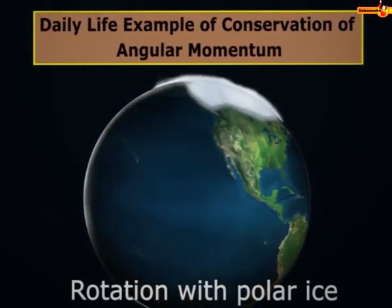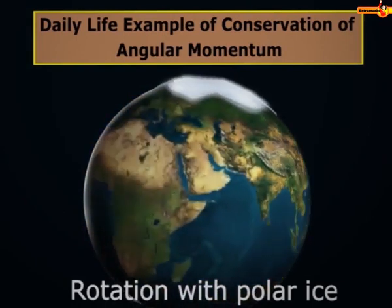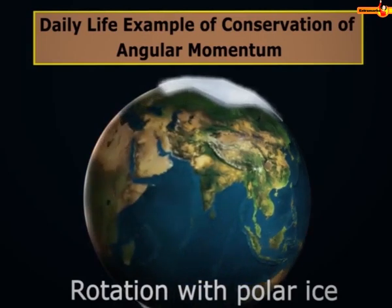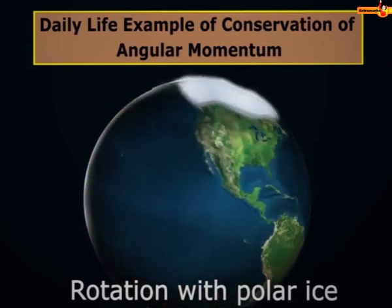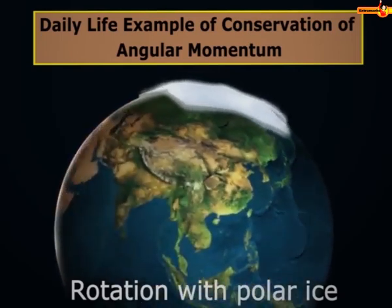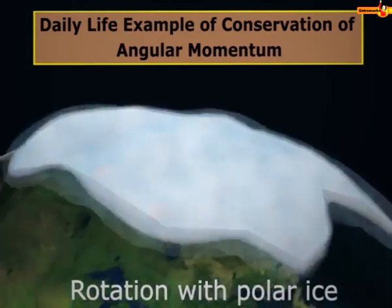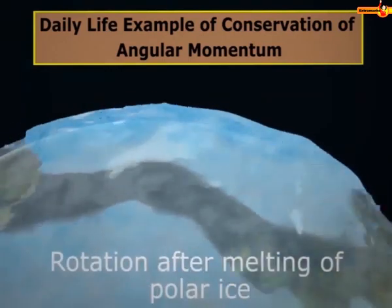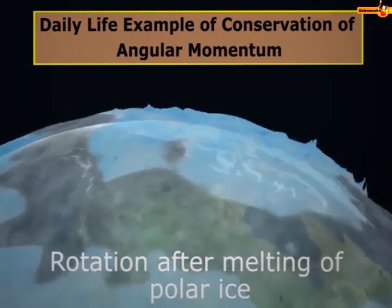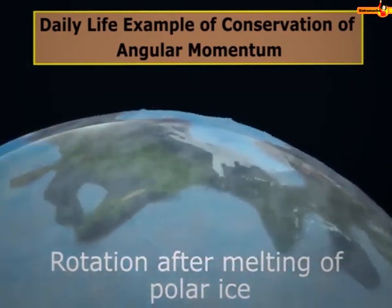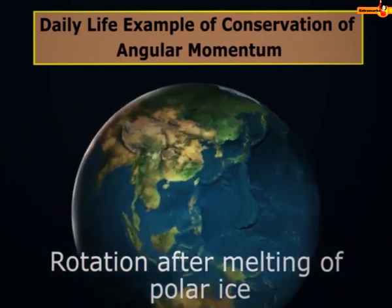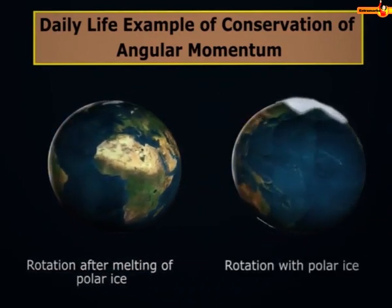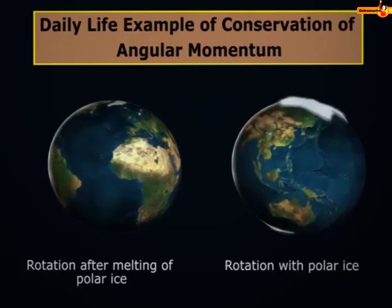Have you ever anticipated the effect of global warming on the duration of the day? If all the polar ice melts and water flows into the oceans, the duration of the day on Earth will increase. Initially, when ice is on the poles near the axis of rotation, the moment of inertia of the Earth is less. When this ice melts and spreads over the Earth's surface, the moment of inertia increases. In the absence of external torque, angular momentum remains constant, so angular velocity decreases, resulting in a longer day.